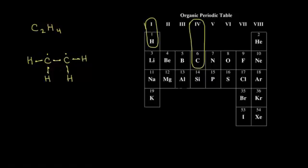This is not the correct dot structure, because if you count up the number of electrons around carbon — let's do the left carbon — I get two, four, six, and then seven electrons. With only seven electrons around each carbon, carbon does not satisfy the octet rule. The only way for carbon to get an octet of electrons would be if this magenta electron moved in here and this electron moves in here to form a double covalent bond between those two carbons.